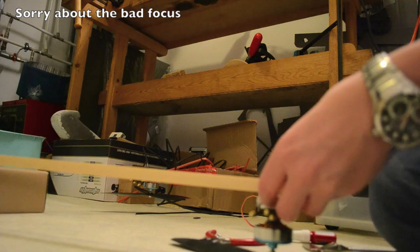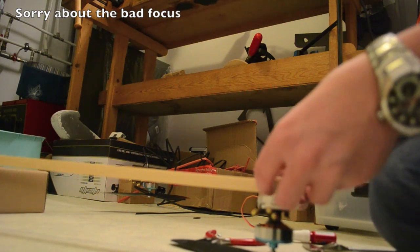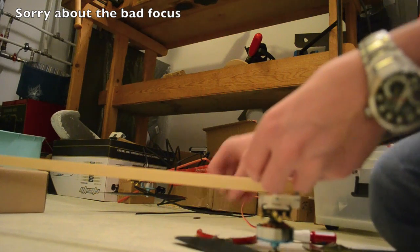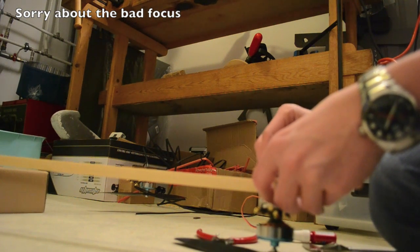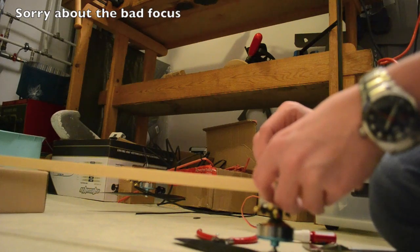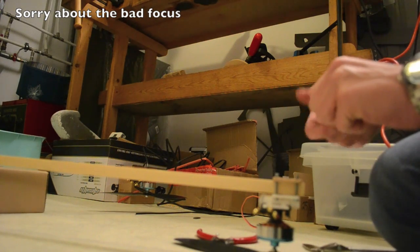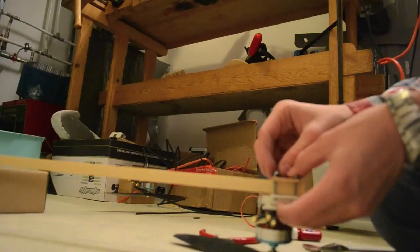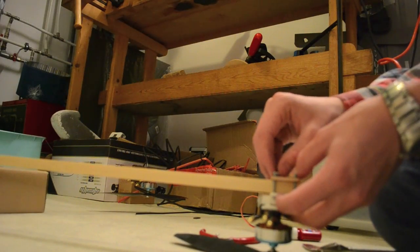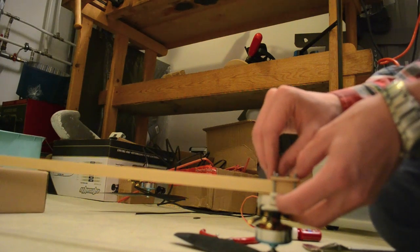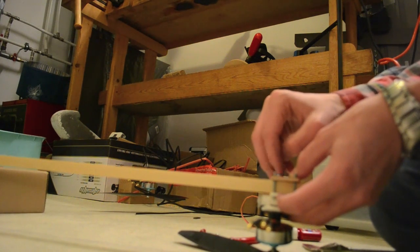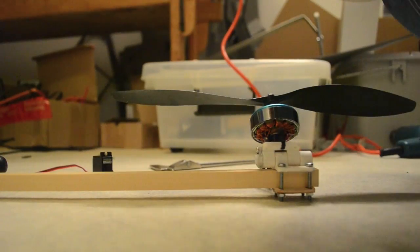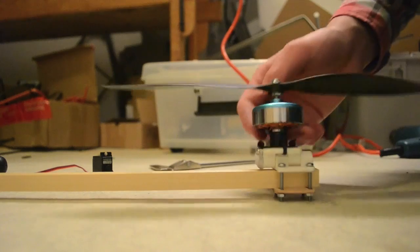We now have complete control over where this is going to be mounted. We're going to add a little bit of Loctite because this is very important to keep in. Now we have mounted the yaw mechanism.